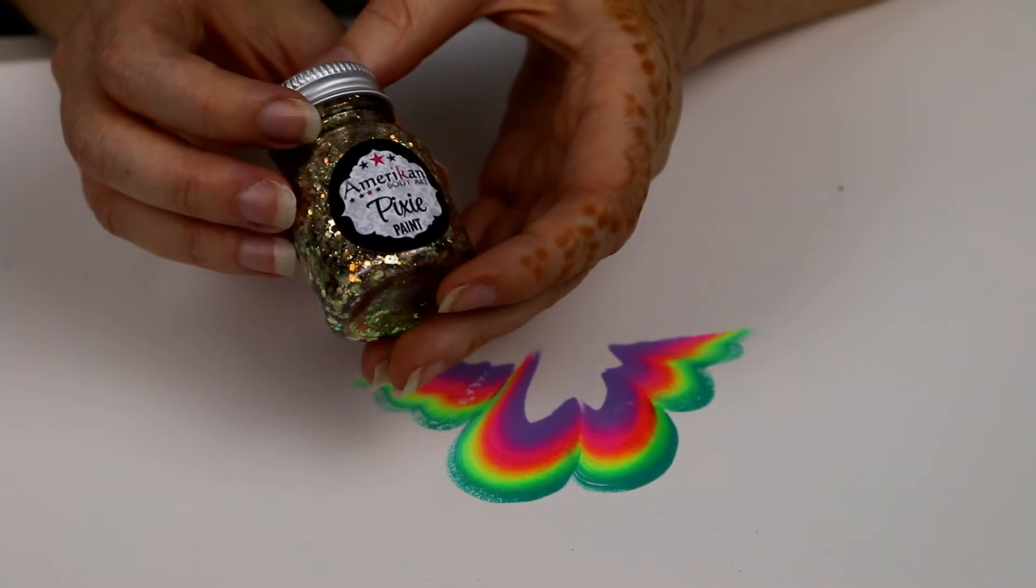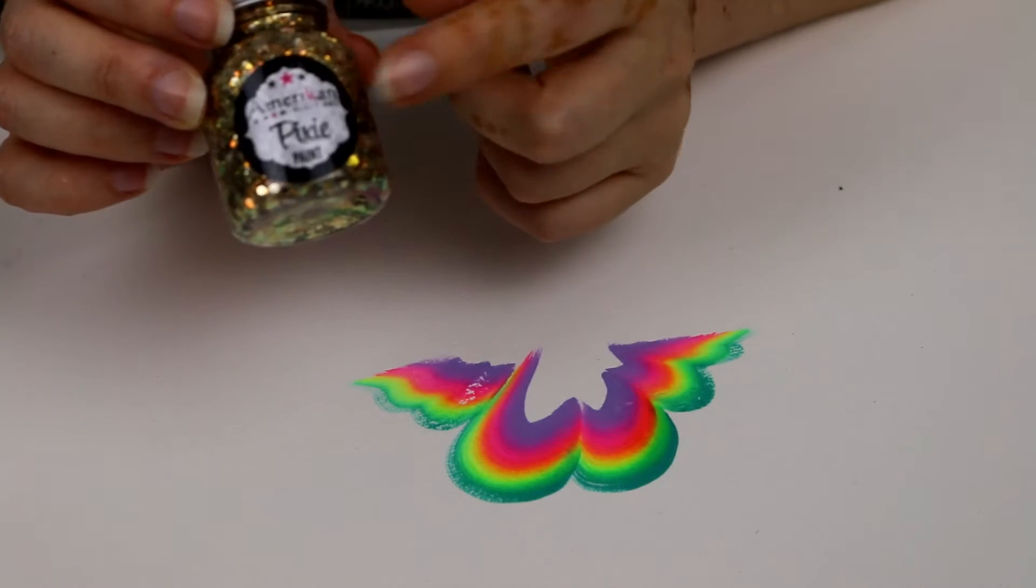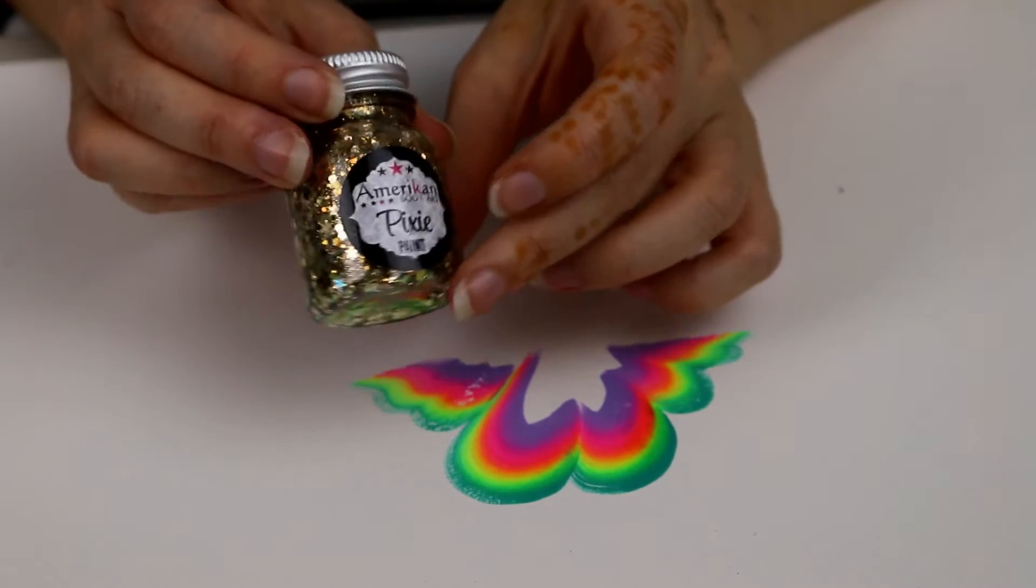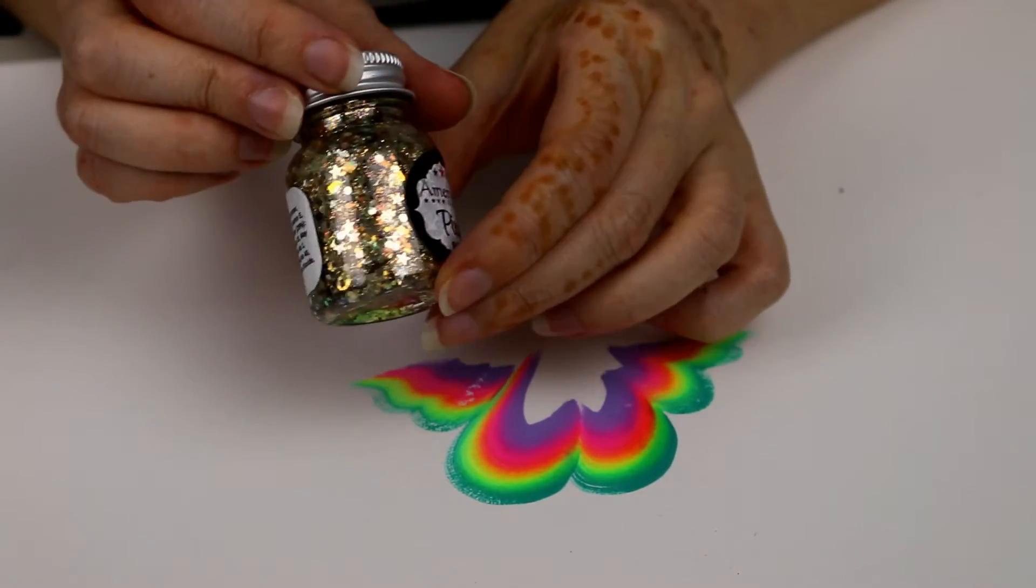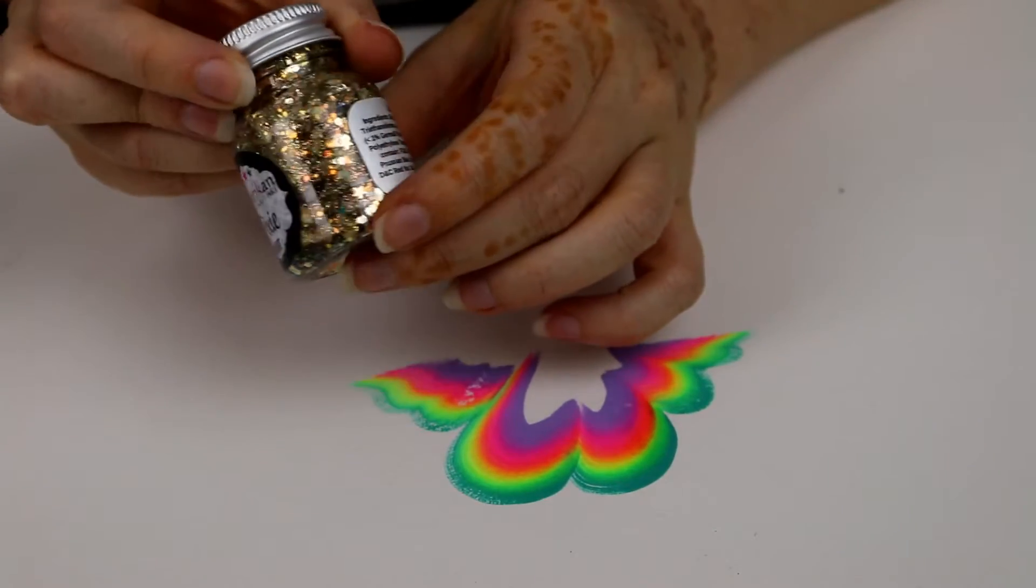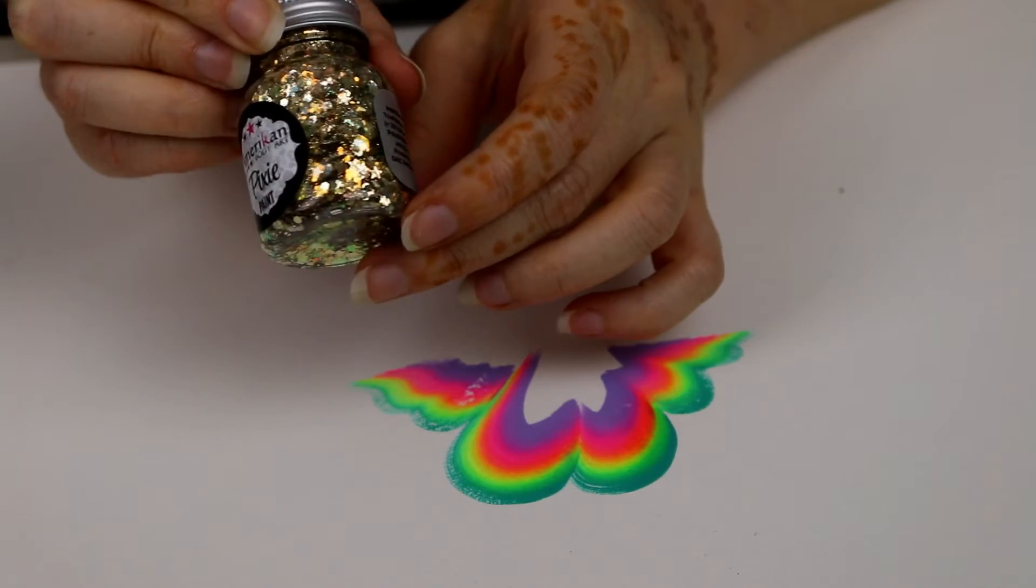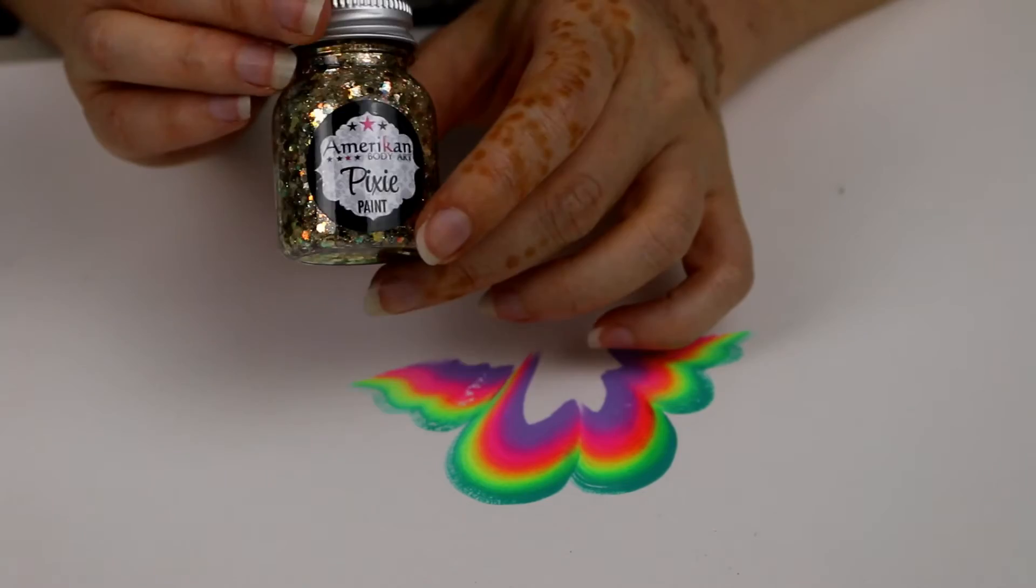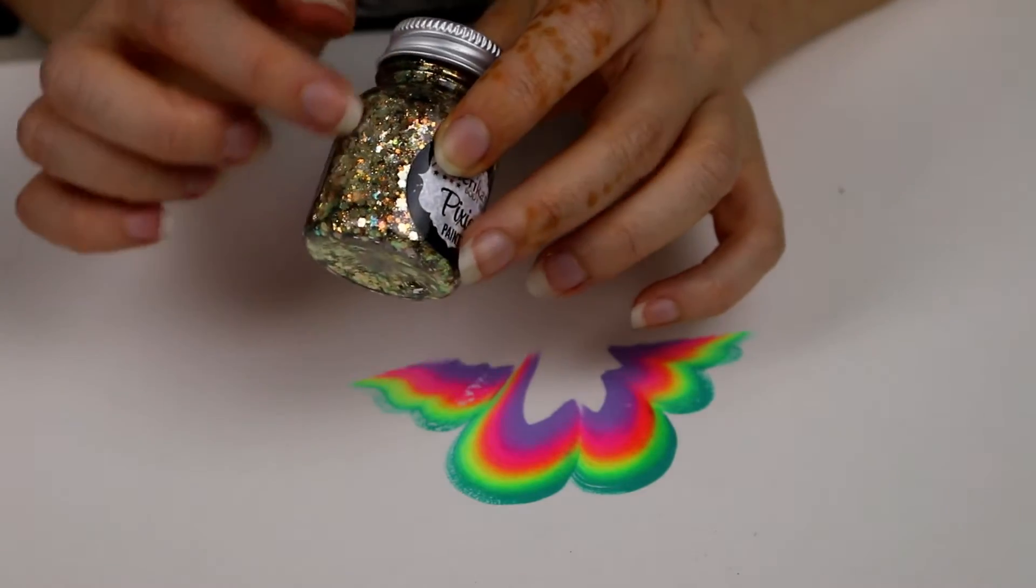The other product I picked up was the American Body Art Pixie Paint. This is a gel formula with lots of different gold glitter mixed through it. It's got little stars, little hexagons, and really fine glitter in there as well.